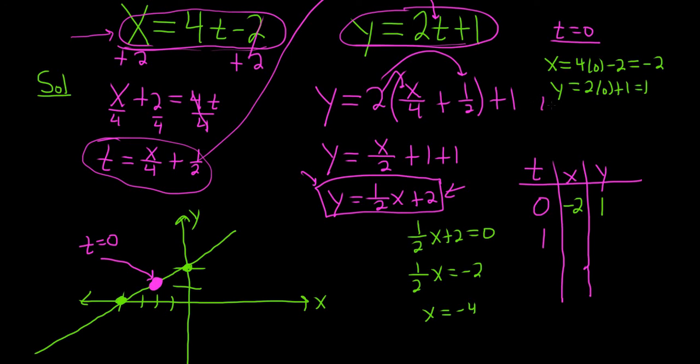Now let's do t = 1. Again, we could have picked any number, you know, bigger, and that would have been fine. Okay, so we'll have X = 4 times 1 minus 2, so that's just 2. So I'm going to come over here and fill it in. And then Y = 2 times 1 plus 1, so 3. So 3.